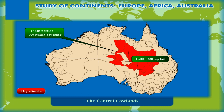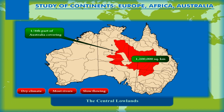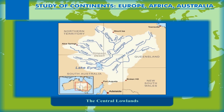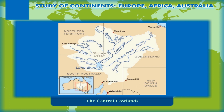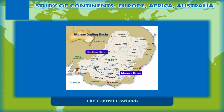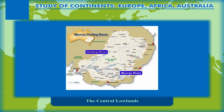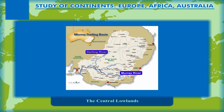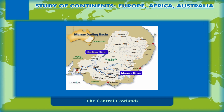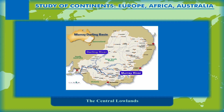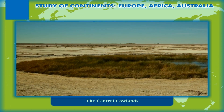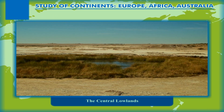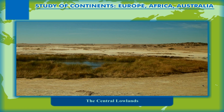Due to dry climate, most rivers are slow flowing and flat. All rivers flow towards the lowest point in the basin, which is 16 metres below sea level at Lake Eyre. The Murray-Darling Basin lies west of the Great Dividing Range in southeastern Australia. It is drained by the two rivers Murray and Darling and their tributaries which arise from the Great Dividing Range. Most of the basin is flat and low lying, receiving very little direct rainfall with long and slow flowing rivers.